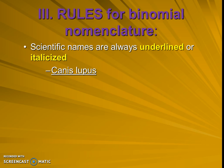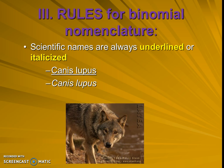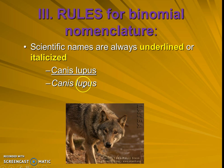There are some rules for this binomial nomenclature business. This is really important, and we've actually been using some of it throughout the year as we've written papers. Scientific names are either underlined or italicized — so Canis lupus could be written as the underlined version or the italicized version. When you're handwriting, it is hard to distinguish italicized from non-italicized, so you might want to go with underlining unless it's something that's typed.